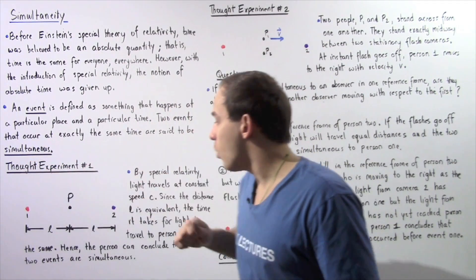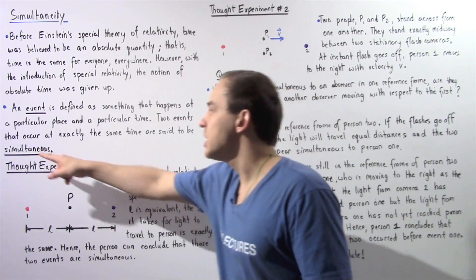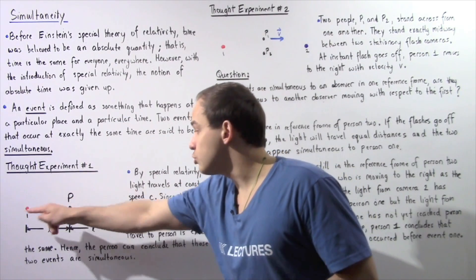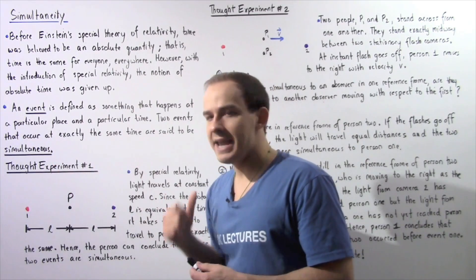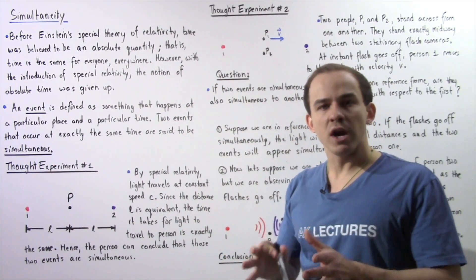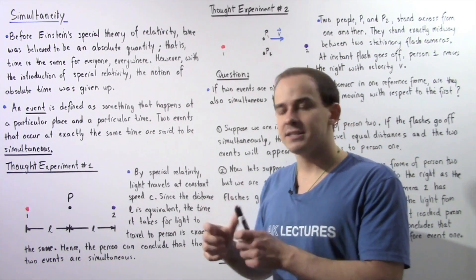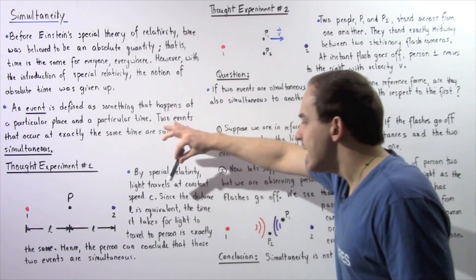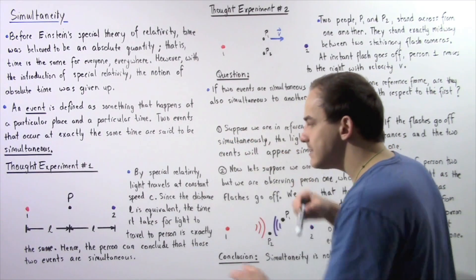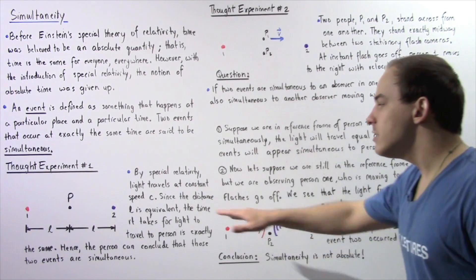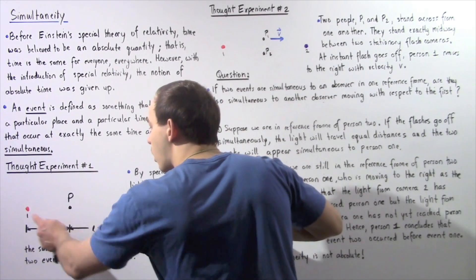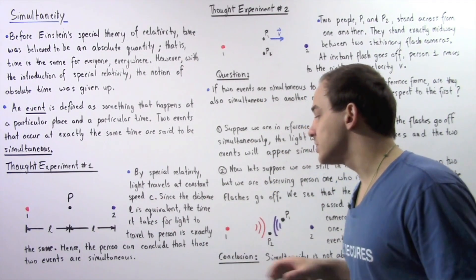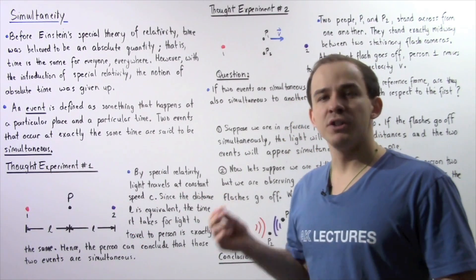So these two events — event number one and event number two — take place simultaneously. The question is: will the person standing midway between these two events see them as simultaneous? By the special theory of relativity, light travels at the same constant speed C in a vacuum, where C is 3 times 10 to the 8 meters per second. Since the person is found midway and the two distances L are exactly equivalent, the time it takes for light to travel from point one to P and from point two to P will be exactly the same. Therefore, the person can conclude that those two events took place simultaneously.